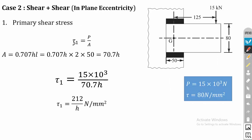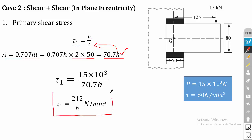The primary stress is direct shear stress, denoted as tau 1. So tau 1 = P / A, where P is the load acting and A is the weld area. The equation for calculating the weld area is 0.707h × l. In the problem, welding is carried on two sides — a parallel fillet weld is carried out with no weld in the transverse region. There are two weld regions of 50 mm each, giving area = 2 × 0.707h × 50 = 70.7h. Substituting, tau 1 = 15×10³ / 70.7h = 212/h N/mm².